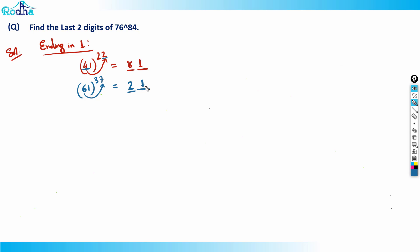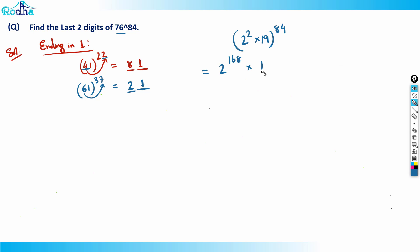Now for 76 raised to 84, we can break 76 as 2 squared into 19. So 76 raised to 84 becomes 2 squared raised to 84 into 19 raised to 84, which gives 2 raised to 168 into 19 raised to 84. Both parts can now be handled separately.